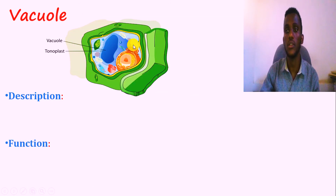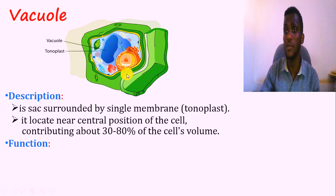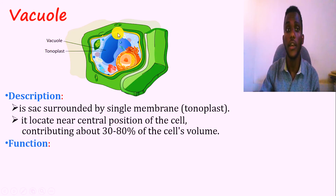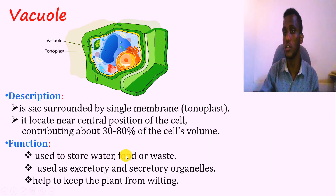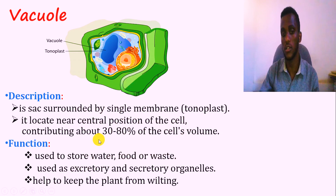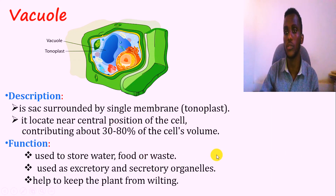The other organelle is the vacuole. A large central vacuole is found in plant cells. In animal cells, vacuoles are rarely found or are small in size. The plant vacuole is filled with fluid and is covered by a special membrane called the tonoplast. The roles of the vacuole include storage of water, food, or waste. It also functions as an excretory and secretory organelle, and helps prevent the cells from wilting and protects the plant.